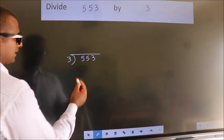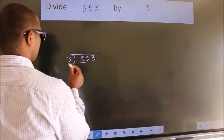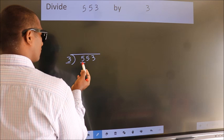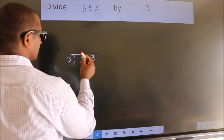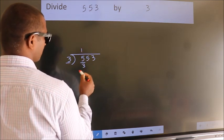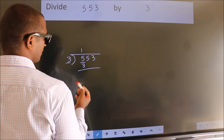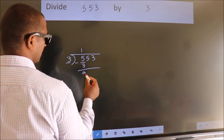Next. Here we have 5, here 3. A number close to 5 in the 3 table is 3: 3 times 1 is 3. Now we subtract and get 2.